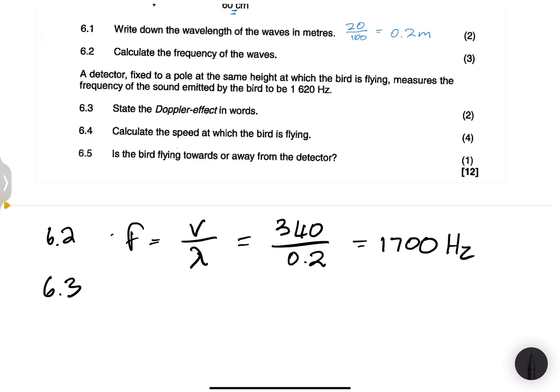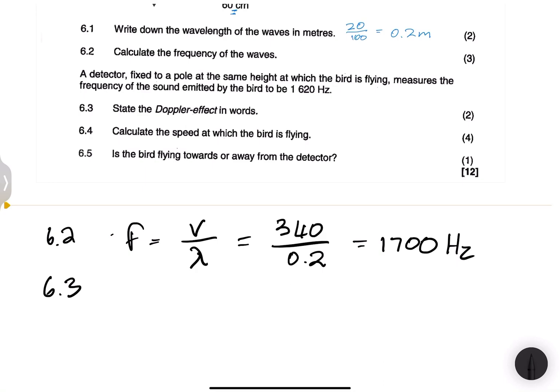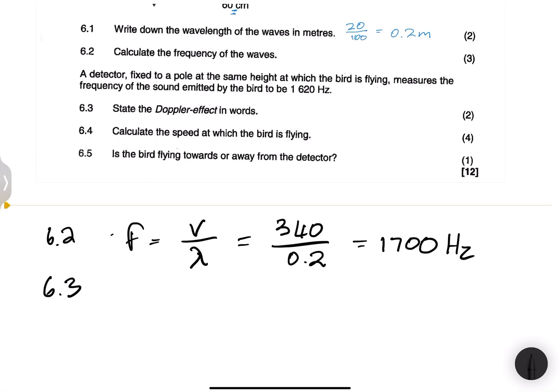For 6.3, they say a detector fixed to a pole at the same height at which the bird is flying measures the frequency of the sound emitted by the bird to be 1,620. I'm sure you can already see that the detected frequency is less than the emitted frequency, or rather the frequency of the source in this case, which is the bird. So obviously, that simply means that the bird must be moving away from that detector there. Now, the first question says state the Doppler effect in words.